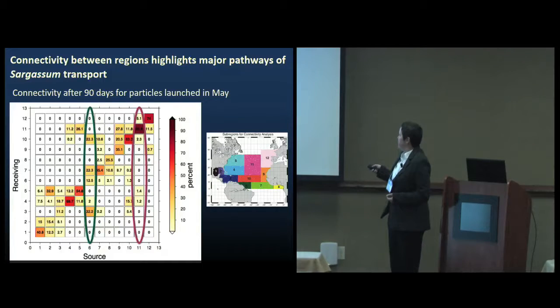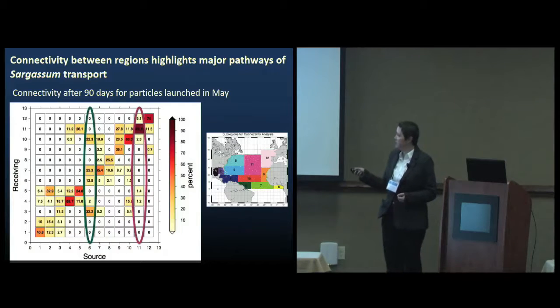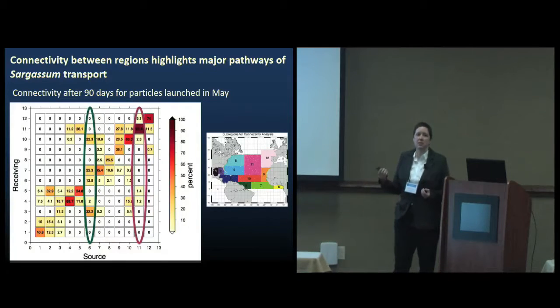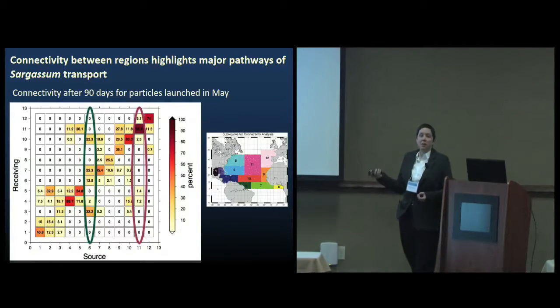Just for some examples, the Amazon plume region here is a really active region for transport. If we look at that as a source region here, we can see that it's exporting more particles than it retains at a three-month timescale. Whereas the central Sargasso Sea is a really convergent region. We know that our inert particles are converging there. At three-month timescales, over 85% of the particles that start there are still there.